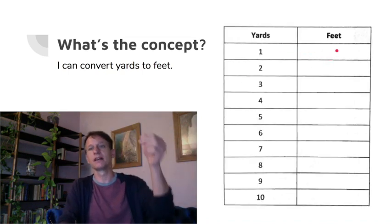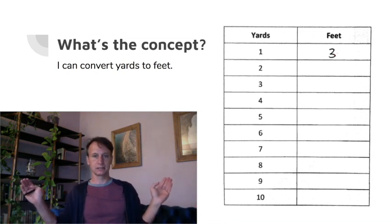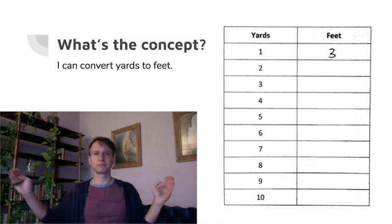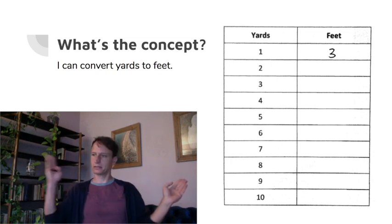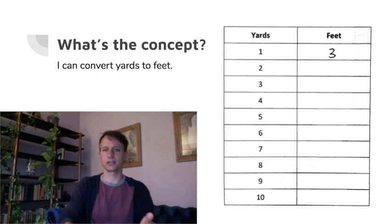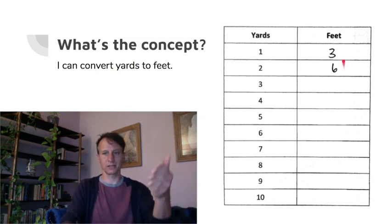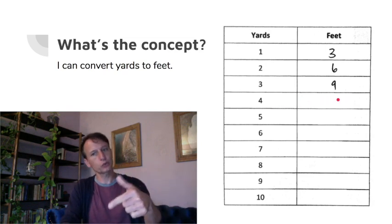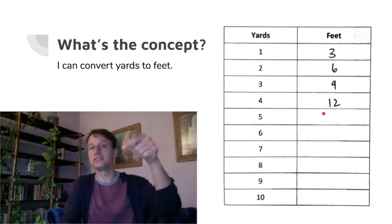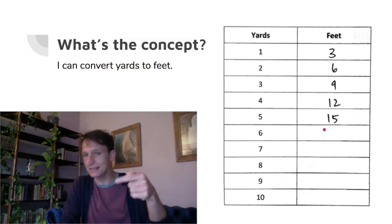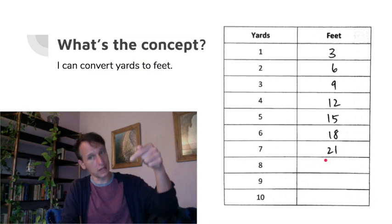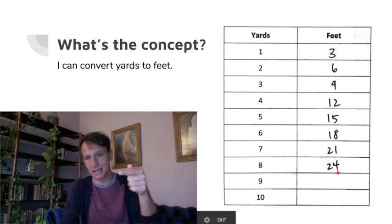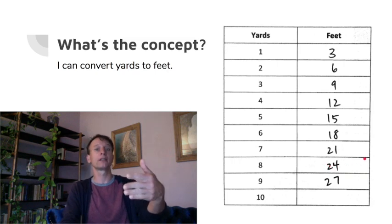Here we go — yards to feet. One yard is three feet. Picture that yardstick — it's similar to a meter, which is closer to about 39 inches, just a little more than a yard. Inside that yardstick there are one, two, three feet. Two yard sticks would give you six feet. You can see the pattern — we are skip counting by threes: three, six, nine, twelve, fifteen, eighteen, twenty-one, twenty-four, twenty-seven, thirty.